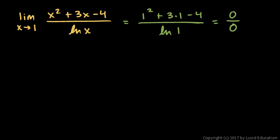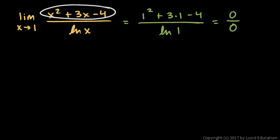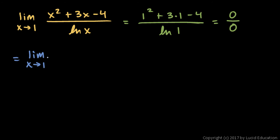L'Hôpital's rule is the approach we apply here. L'Hôpital's rule says that when you have the limit of one function over another and it evaluates to an indeterminate form, then you can take the derivative of the numerator and the derivative of the denominator, and then try to evaluate the limit again. So according to L'Hôpital's rule, if the limit is indeterminate, it will equal the limit as x approaches 1 of the derivative of the numerator over the derivative of the denominator.